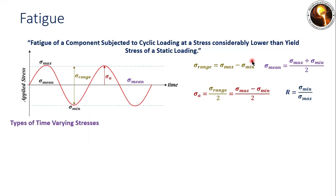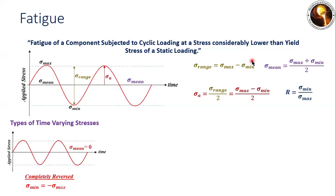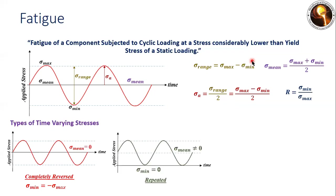There are three different types of fatigue loading or time-varying stresses. The first one is completely reversed loading, where mean stress is zero and the minimum stress is exactly opposite to the maximum stress — that is, sigma min equals negative sigma max. The second important time-varying stress is repeated loading, where minimum stress must be zero, but mean stress should not be zero.